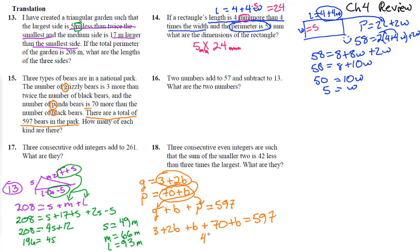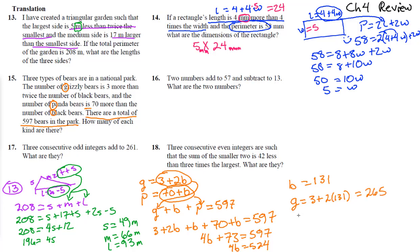After substitution we have one variable: 4b plus 73 equals 597. Subtract 73 from both sides: 4b equals 524, so black bears equals 131. Then grizzlies equal 3 plus 2 times 131, which is 265. Pandas equal 70 plus 131, which is 201. So there are 131 black bears, 265 grizzlies, and 201 pandas.